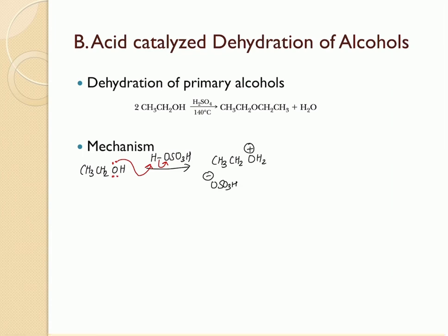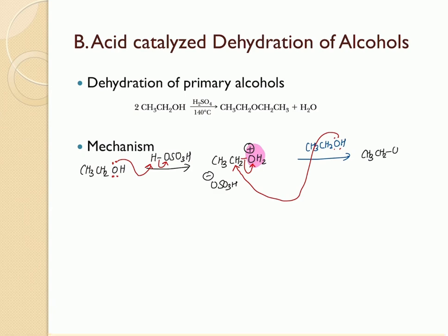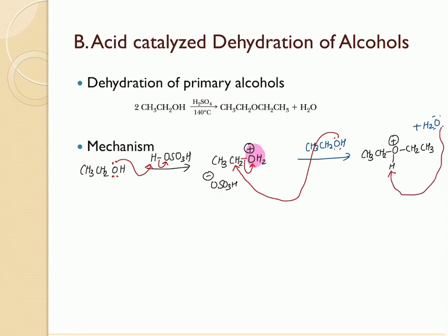Once the alcohol is converted into a good leaving group, a second molecule of alcohol makes a nucleophilic SN2 attack on the electrophilic carbon, thrusting the leaving group out and forming a protonated ether — a new oxonium ion. The base, or water released in the first step, then abstracts the hydrogen and neutralizes the positive charge, giving us the desired ether.